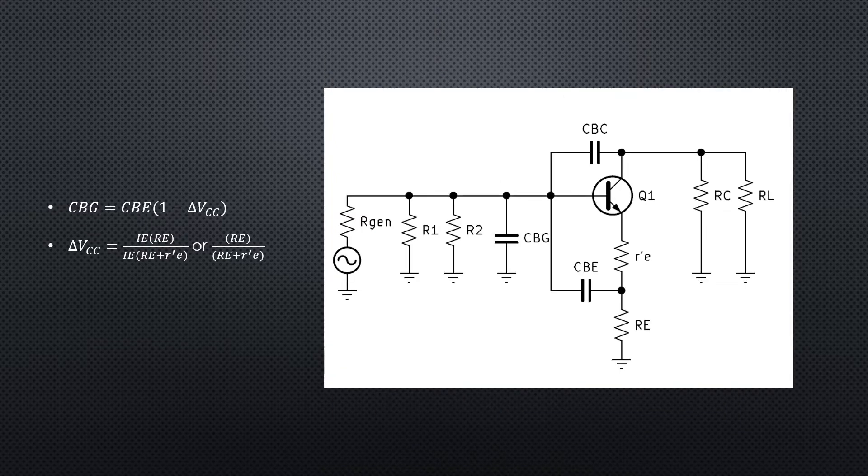Now we can find the capacitance base to ground, or CBG. CBG equals CBE times the quantity 1 minus the gain of the amplifier in common collector mode, which we can find simply by dividing RE by RE plus R prime E.